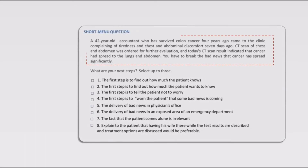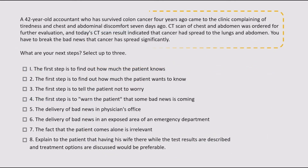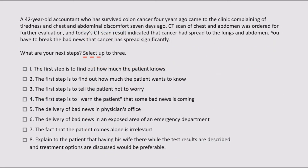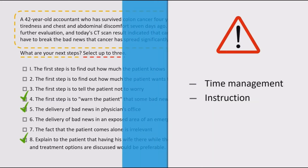As you see, there are three components of the short menu questions: a clinical case, a question, and the possible correct answers. First, read the clinical case, then the question and then the instruction. Choose the answers you believe are correct with the instructions in mind. The ability to manage your time and pay attention to instructions are two key factors in conquering the short menu question.